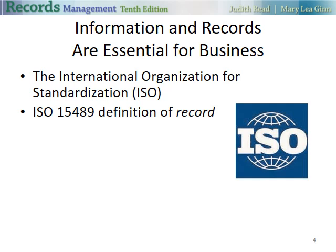ISO is a worldwide federation of national standards organizations. Their definition of records is information created, received, and maintained as evidence and information by an organization or person in pursuance of legal obligations or in the transaction of business. Very similar to the ARMA definition. They all include some essential elements that you'll be covering in this chapter.